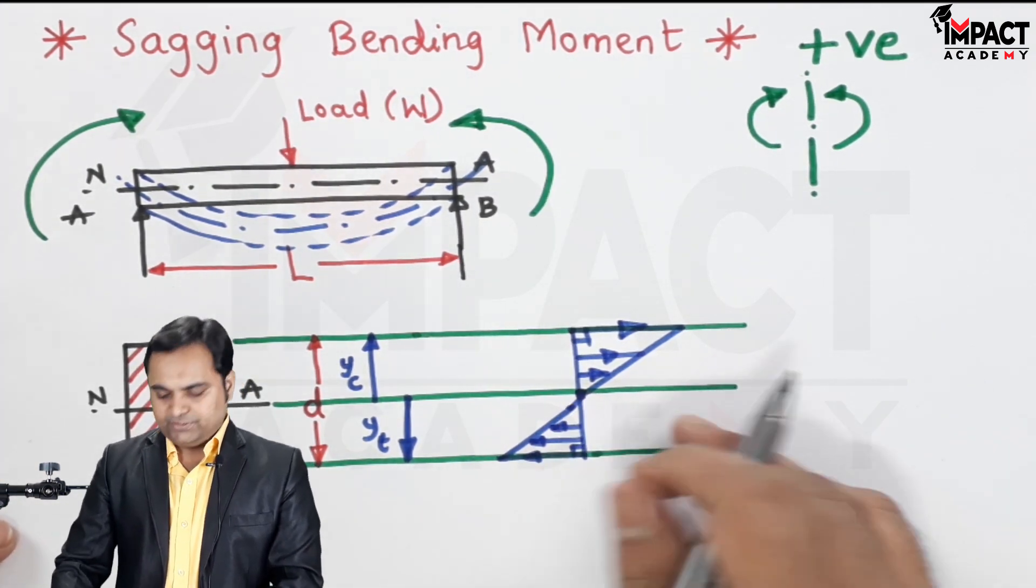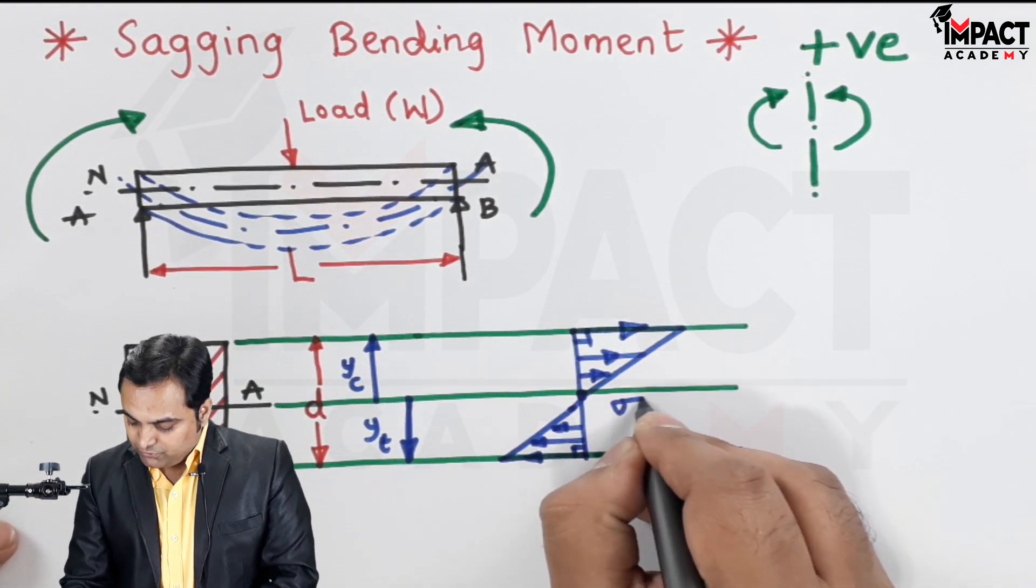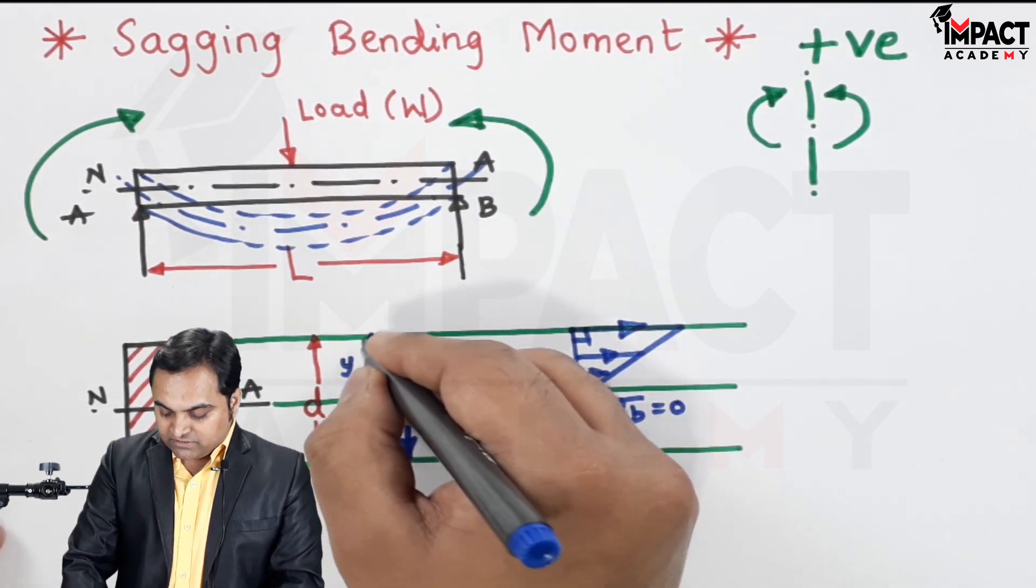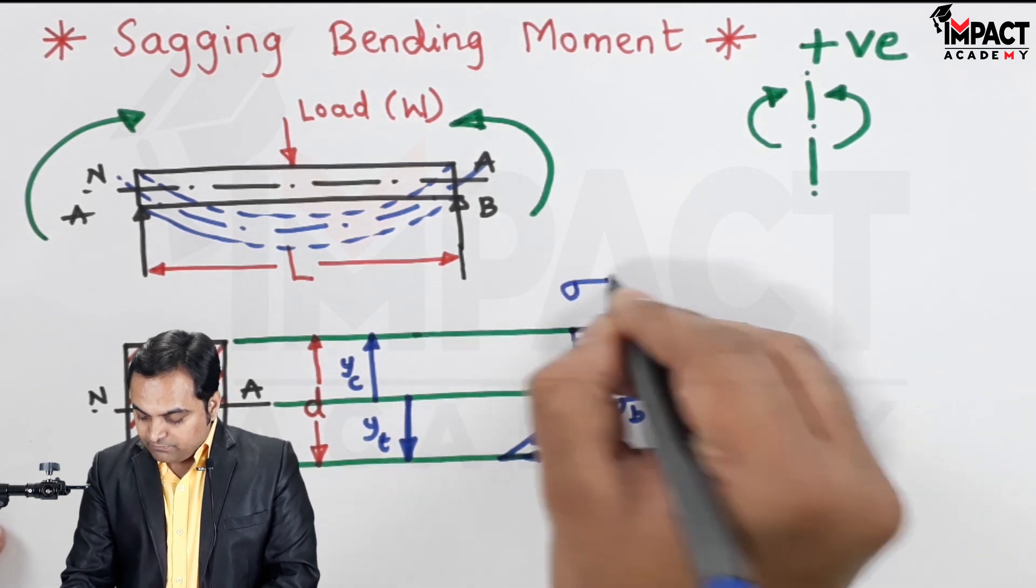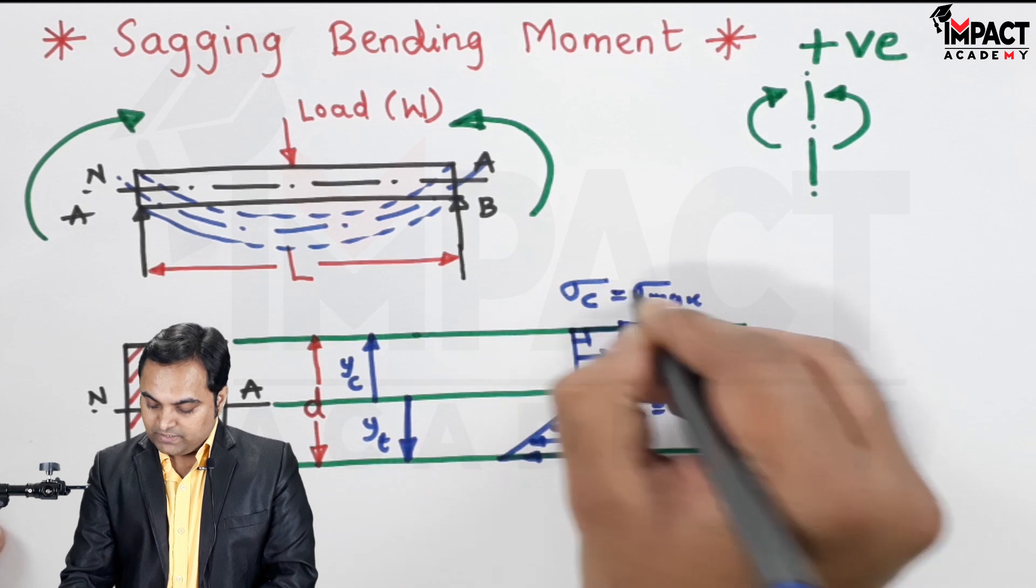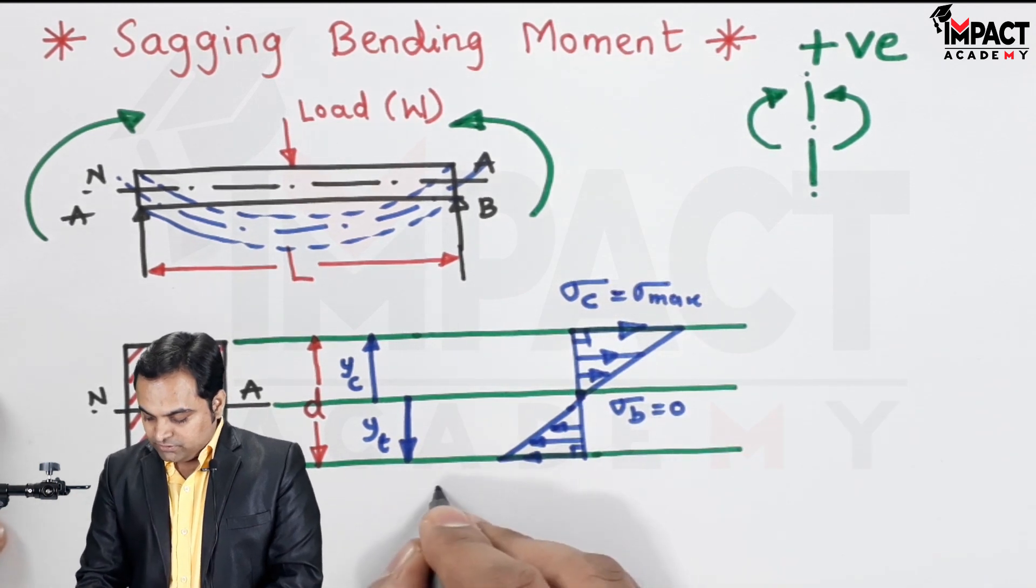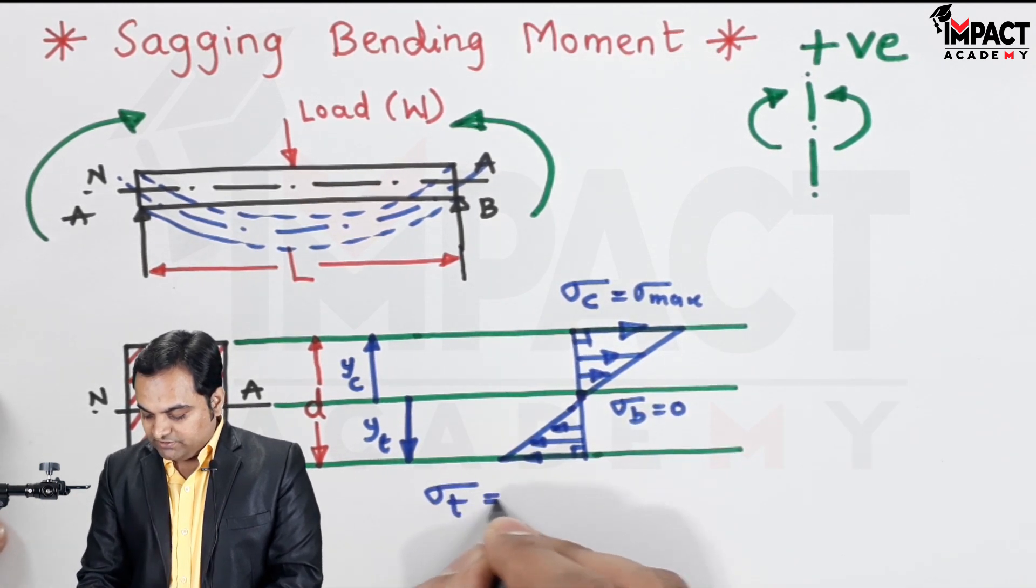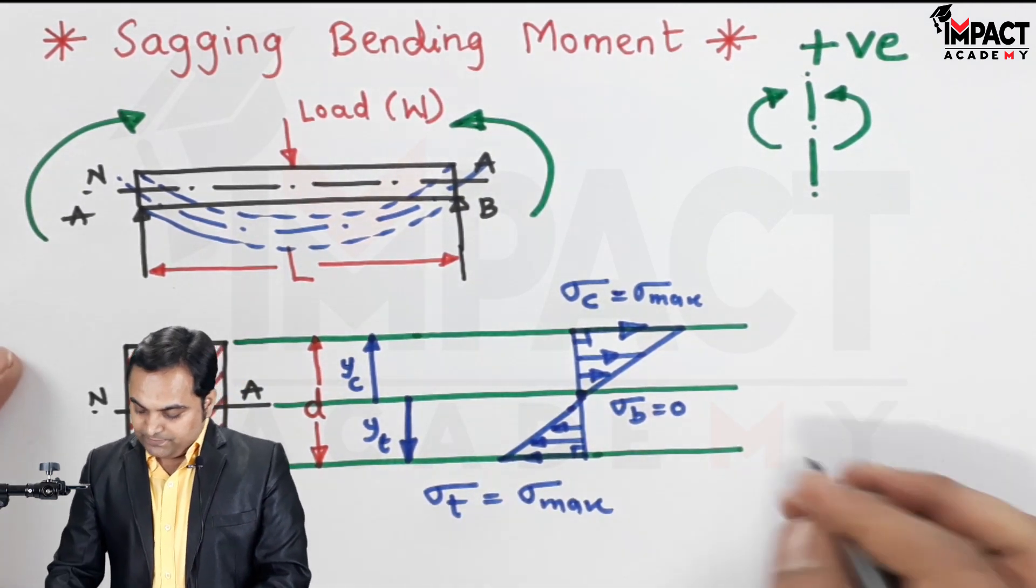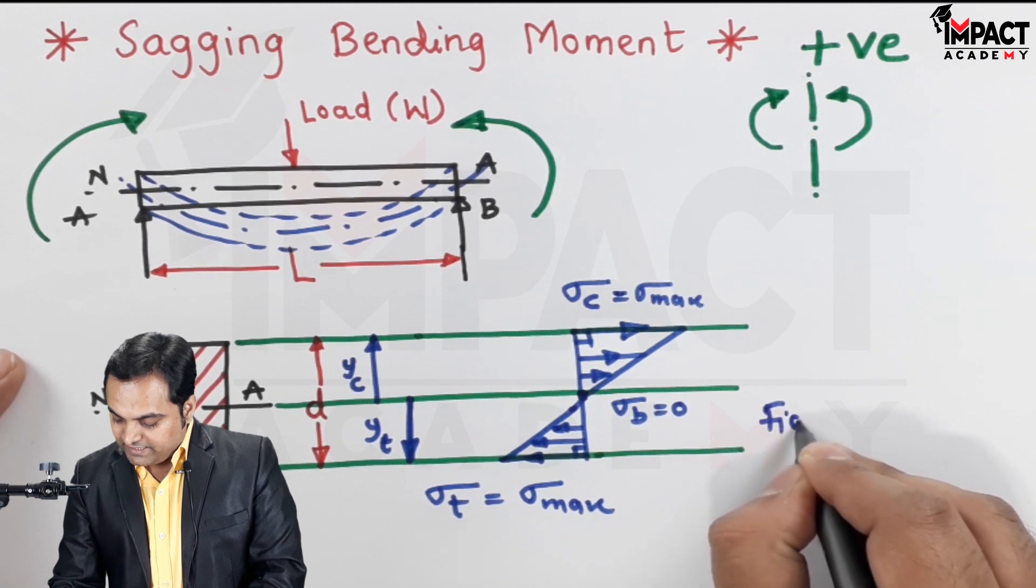At the center the value of stress is 0, so bending stress is 0 at the center. At the top it is maximum and it is compressive because of y_c. At the bottom it is the tensile stress sigma_t, also the maximum stress. So this is the bending stress distribution diagram.